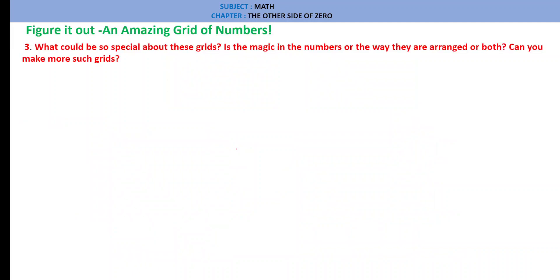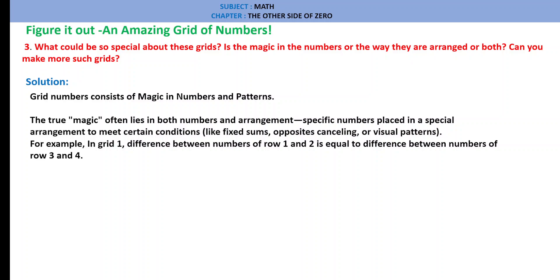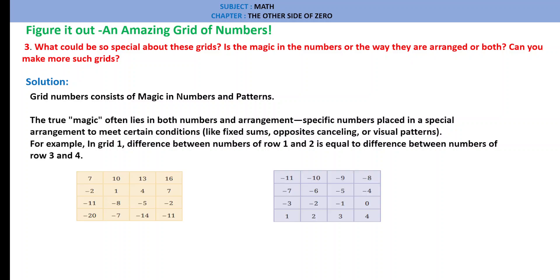Question 3: What could be so special about these grids? Is the magic in the numbers, the way they are arranged, or both? Can you make more such grids? Solution: Grid numbers consist of magic numbers and patterns. The true magic often lies in both numbers and arrangements — specific numbers placed in special arrangements to meet certain conditions like fixed sums, opposite cancelling, or visual patterns. For example, in grid 1, the difference between row 1 and row 2 is equal to the difference between row 3 and row 4. Thank you.